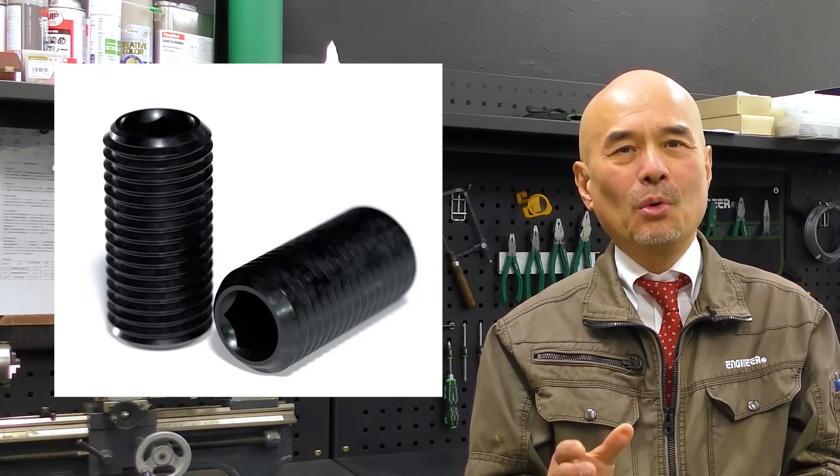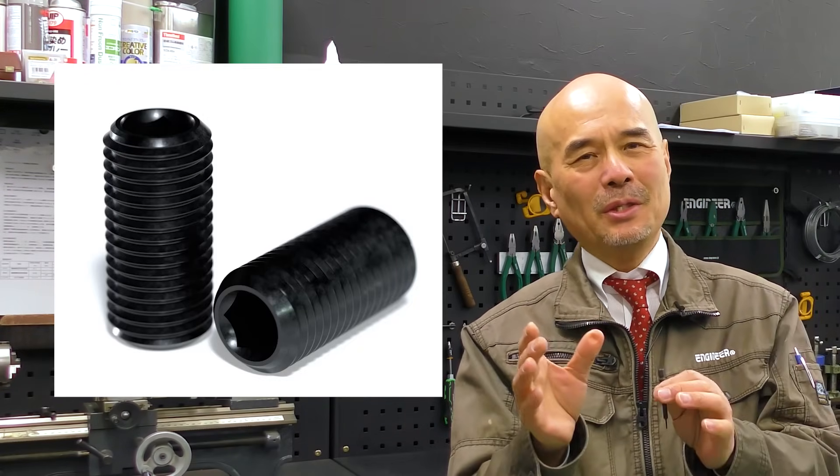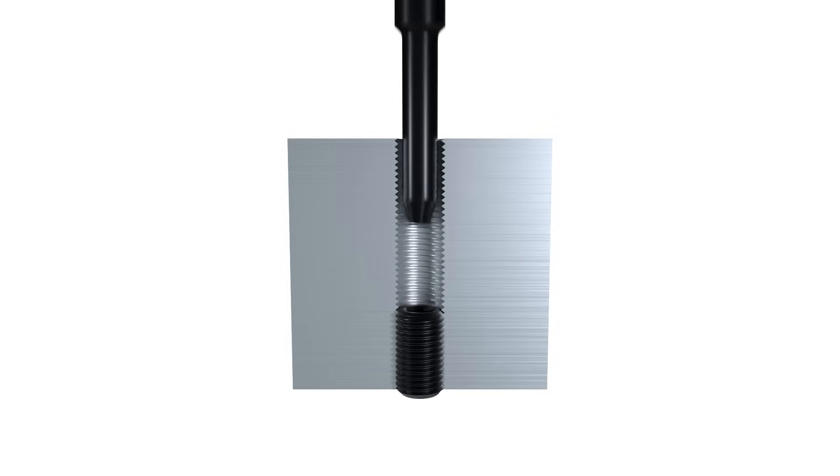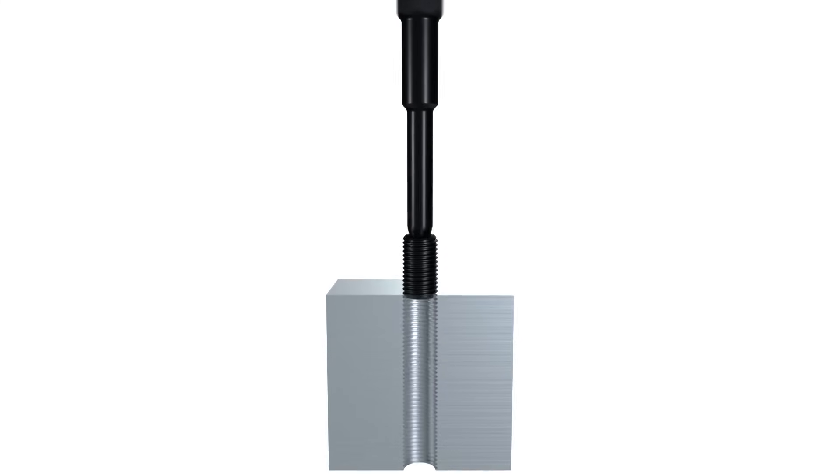Not only for socket screws, but also for hollow set. Oh no, hollow set is not the exact name. The exact name is hexagon socket set screws. Anyway, middle mogla can easily extract the slipped set screws.